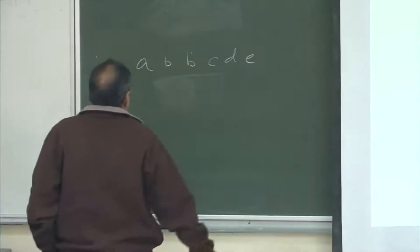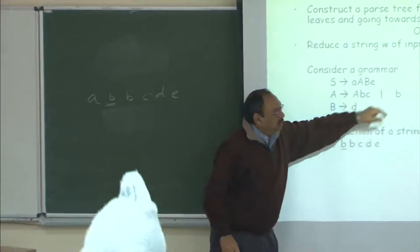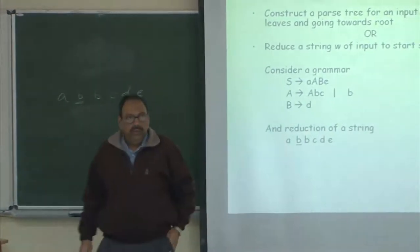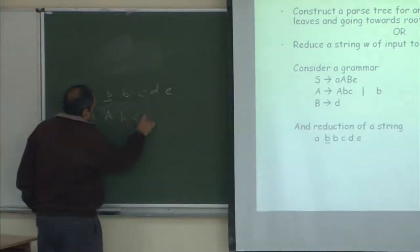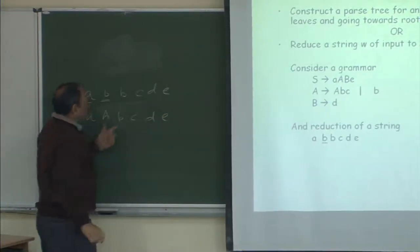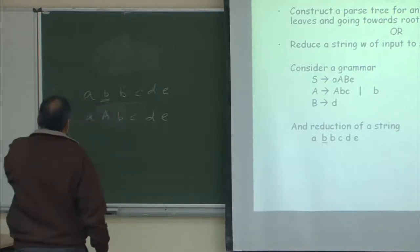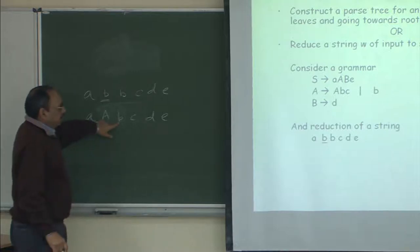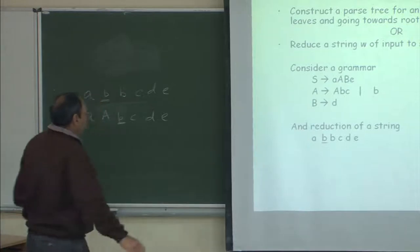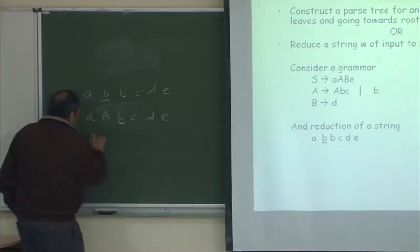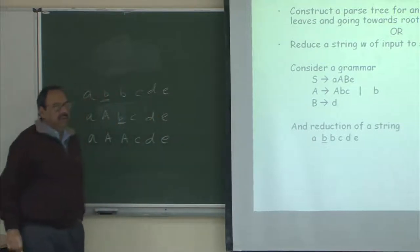The first thing I do is I find B which matches the right-hand side of the production A goes to B. So I replace this by A, and after reduction my string becomes a new configuration. Now again I look through this and I find there is another B, so I go ahead and try to replace that by its left-hand side.